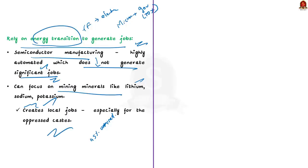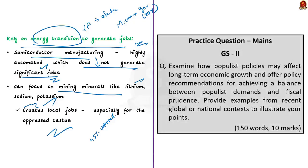This is the second point mentioned in the article to address the issue of jobless growth. By making structural changes to escape the middle income trap and providing due attention to the mining of materials like sodium, lithium and potassium used in semiconductor industries, the government can achieve both growth and generate employment for the people. This will help India in the long term.